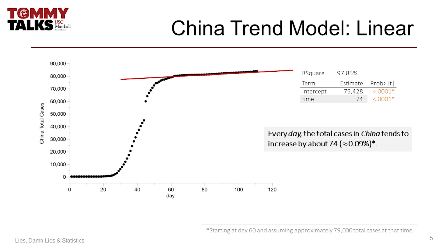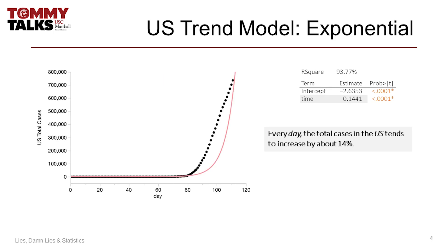You can see in the graph how straight the red trend line is. Of course, before then was a very different story. The statistics on the chart indicate a very good fit for the basic model, and each day since day 60 has seen approximately 74 new cases being reported. In general, this amounts to about a 0.09% daily increase. In stark contrast, the pattern in the US follows more of an exponential trend. Also a reasonably strong model, the data here indicates that each day brings about 14% more total cases reported.